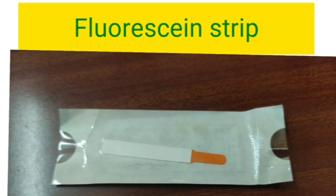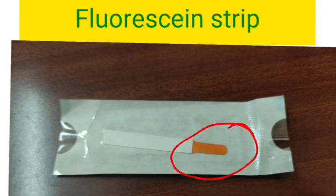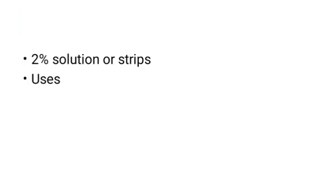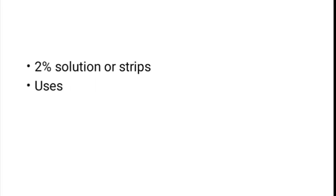Next we have the fluorescein strip. This strip has the orange thing at the tip — that is the fluorescein. It comes in 2% solution or 2% solution impregnated in the strips. The common question asked is the uses of the fluorescein strip. It is used mainly to stain the ocular surface, that is we are staining the tear film, thereby coating the cornea and conjunctiva. It can be used in corneal abrasions to identify the epithelial defect, and also in applanation tonometry — that is Goldmann applanation tonometry.